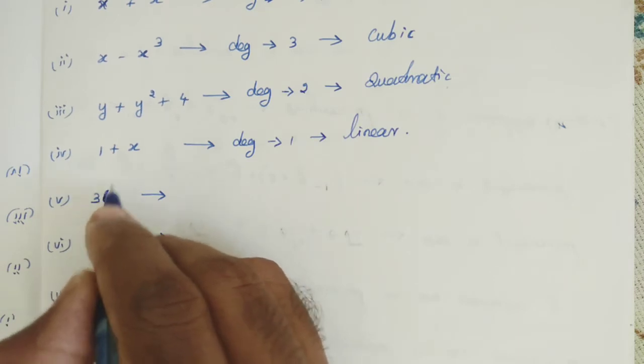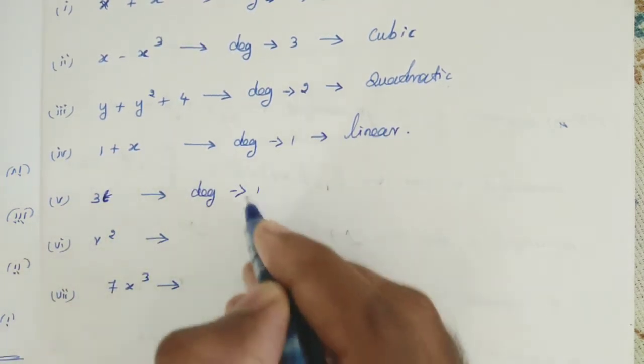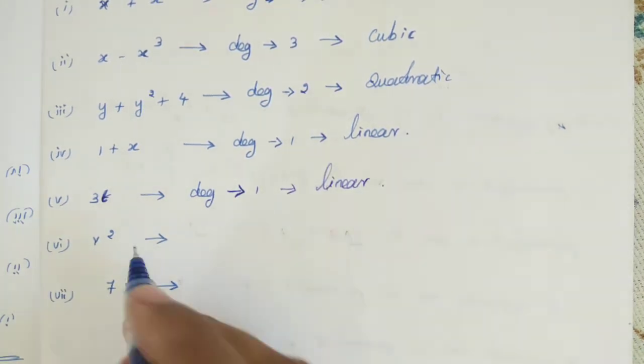Next step. 3T. T power 1. So degree 1. Degree 1, so it is linear.